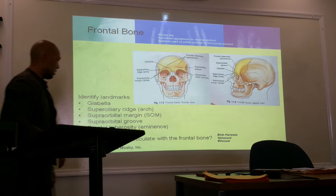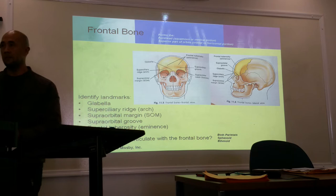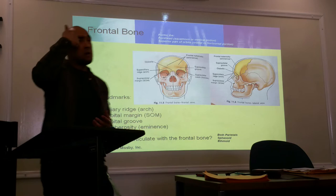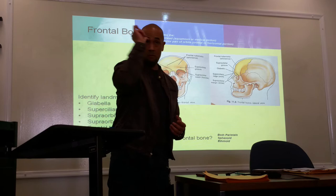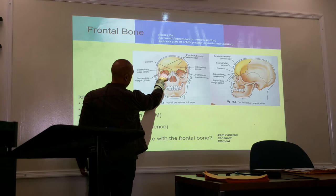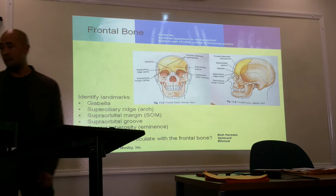The four bones that articulate with the frontal bone include both parietals, the sphenoid, and the ethmoid bone. The supraorbital margin is right below your eyebrows — it's the ridge at the edge of your orbit at the top of the eye socket.